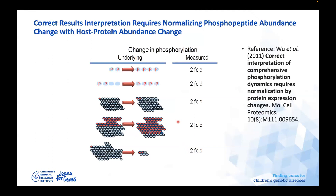You perform pathway enrichment and kinase-substrate enrichment using the Kinase Finger tool, also in Bioconductor. Correct interpretation of phosphopeptide abundance change requires normalization by the host protein abundance change. For example, each blue circle represents a protein and each red P represents a phosphorylated residue. Even though you may observe a two-fold change in phosphorylation count, if the protein abundance itself has changed substantially, the true fold change in the phosphorylation proportion is actually much greater.